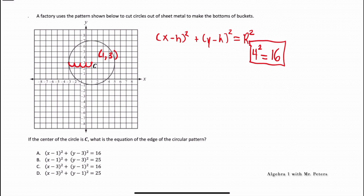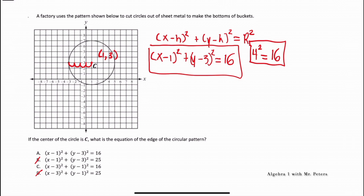From this information, we can eliminate answer choices B and D because they have the wrong radius. Once we plug in our x and y coordinates, we have (x - 1)² + (y - 3)² = 16. So our answer choice is A. If you're looking at C, what they did was switch the coordinates around, so just be careful when solving these types of problems.